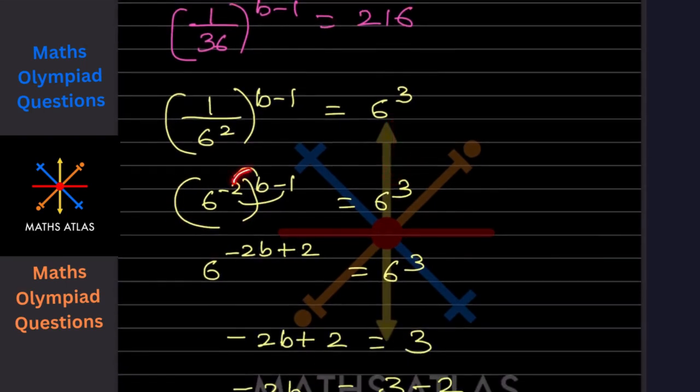Now we will expand this. That will be minus 2b, and minus minus becomes plus, so plus 2.